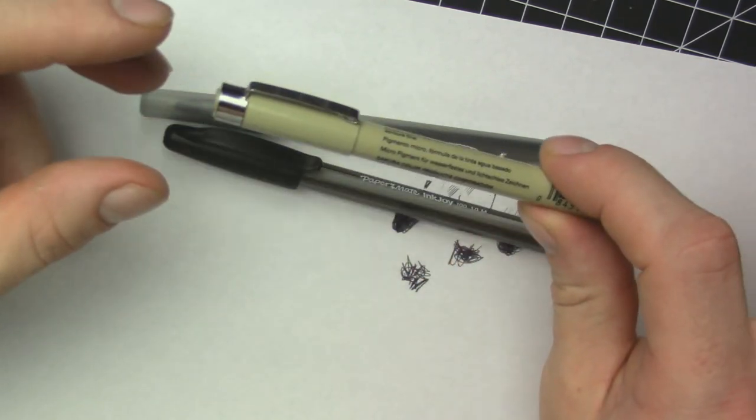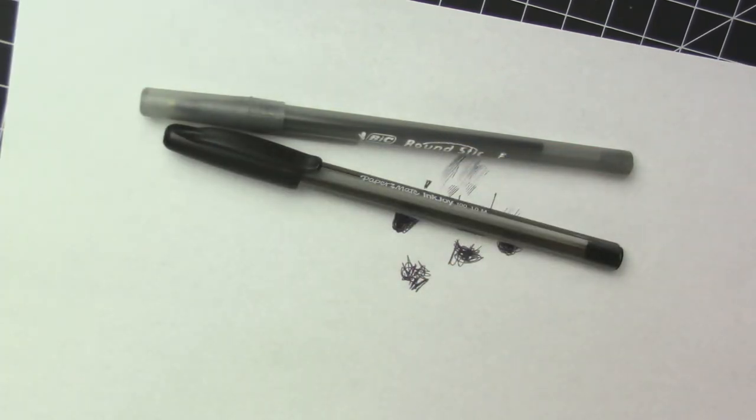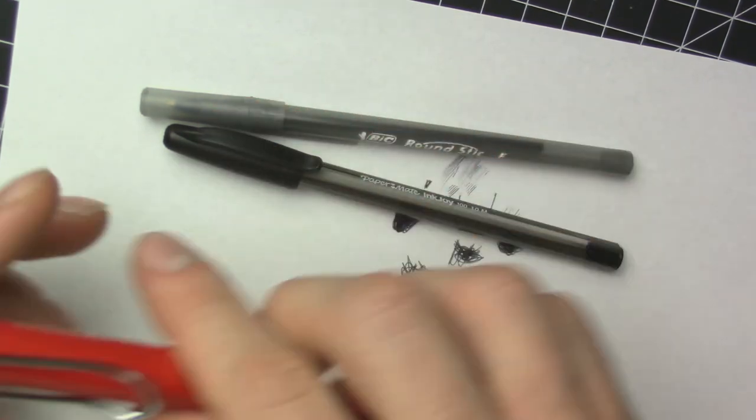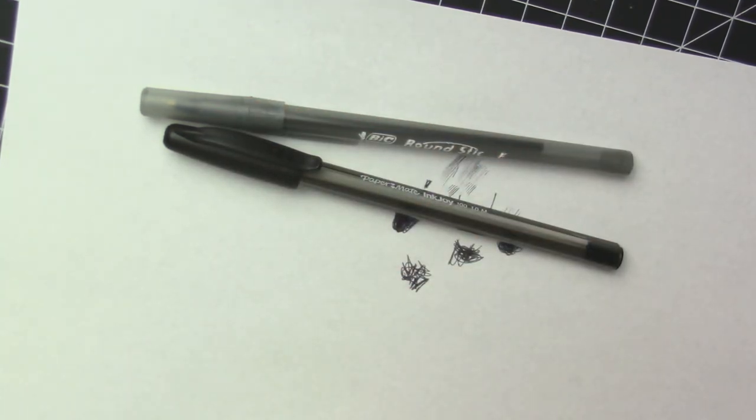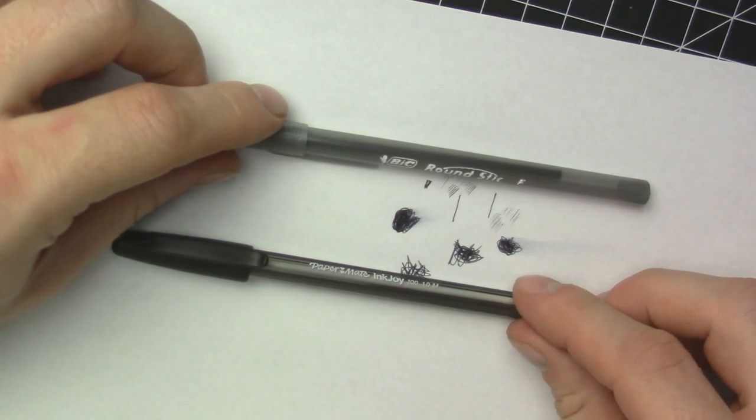Such as that Lamy Safari or more advanced technical pens such as the Rotring Isograph. So those would be the better options if you're gonna be doing line art to design a coloring book because these will smudge, and if you're scanning the art that's going to come up, it's gonna be a bit of work to get that taken off of there.